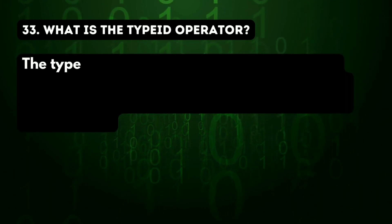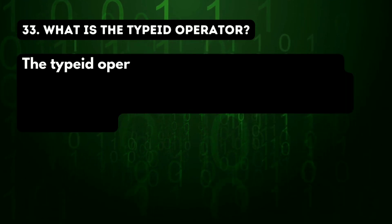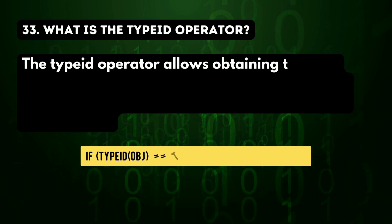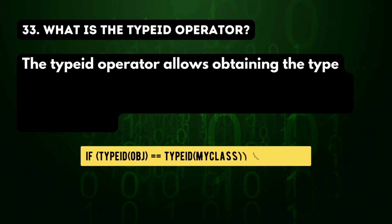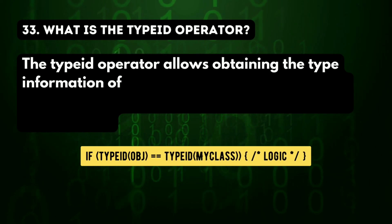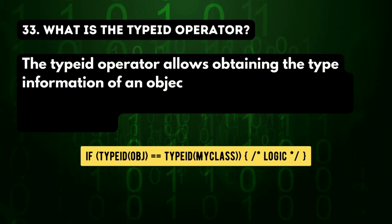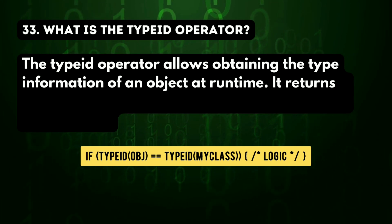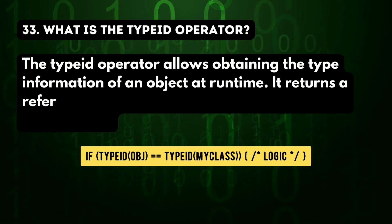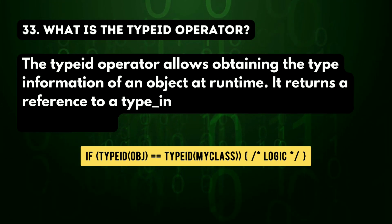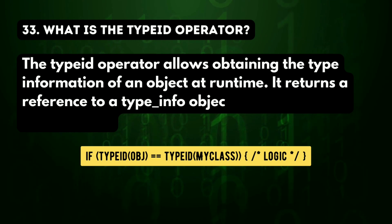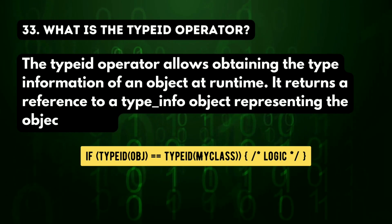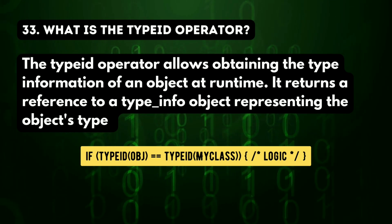33rd question: what is the typeid operator? The typeid operator allows obtaining the type information of an object at runtime. It returns a reference to a type_info object representing the object's type.